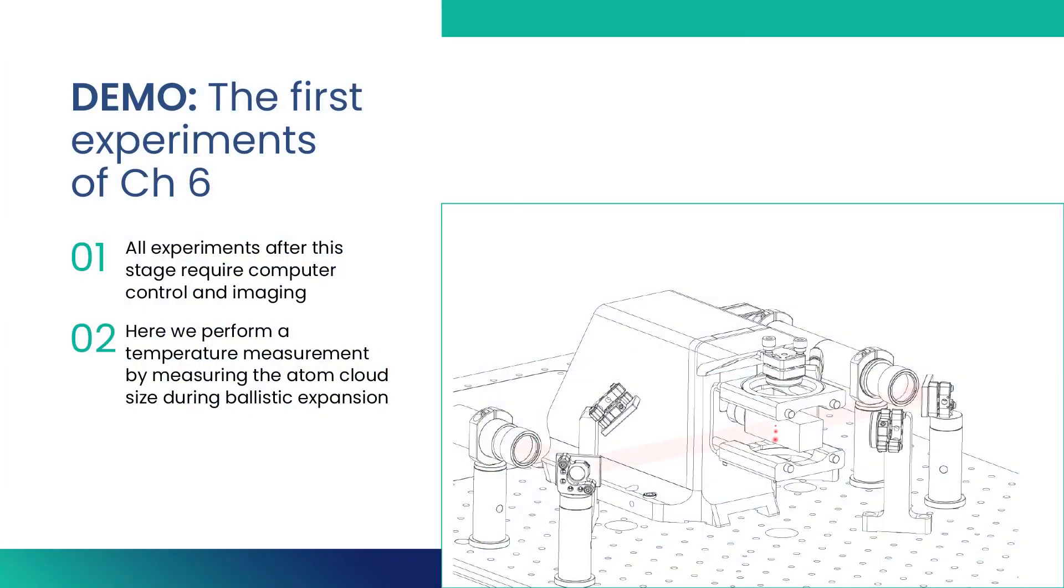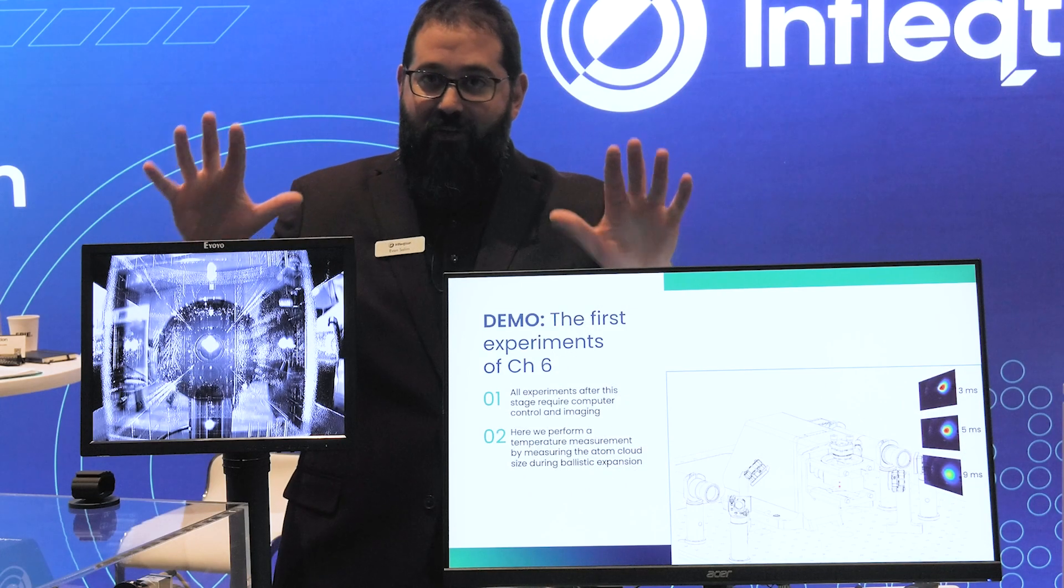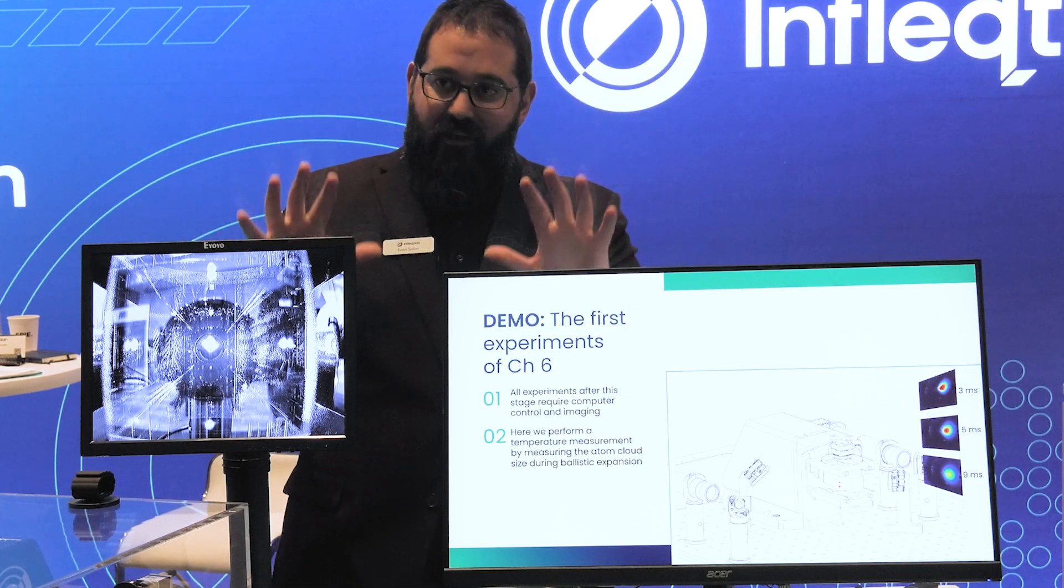Every time we run one of these experiments, we send a probe of light across and we capture that image on a camera, which allows us to create these false color images, which are basically atom density as a function of position. And we do that multiple times to calculate the temperature series.